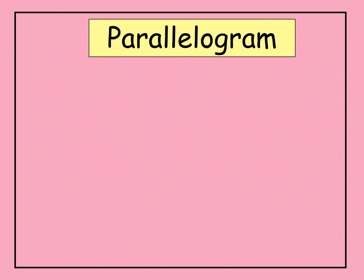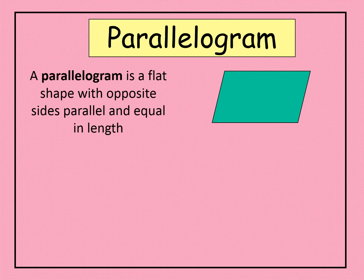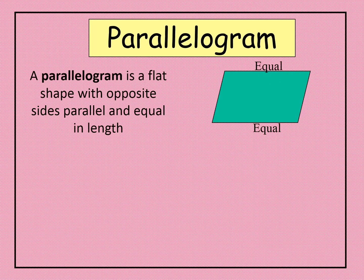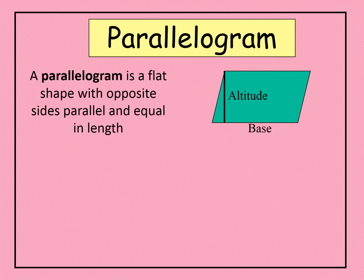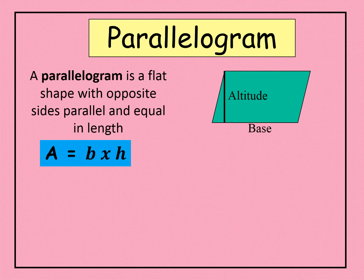The next plane figure is the parallelogram. A parallelogram is a flat shape with opposite sides parallel and equal in length. In a parallelogram, we have the altitude or height and the base. The formula for the area of a parallelogram is A equals b times h, where b is for base and h is for altitude or height.